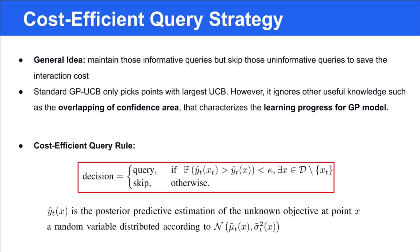As a response, we propose a cost-efficient query strategy to decide whether to receive the feedback every round. The general idea is that we want to keep the most informative queries but skip those that are uninformative. Compared to GP-UCB, we leverage a relative magnitude to characterize the progress of the GP model. We give our cost-efficient query rule in the red box. The agent will only receive the feedback when it is less confident in distinguishing the best candidate, where kappa controls the confidence threshold for the query.